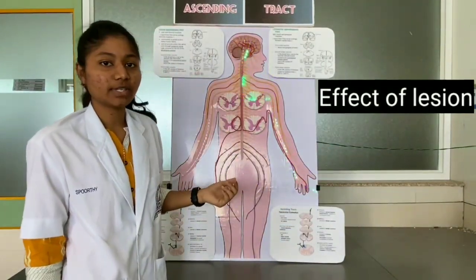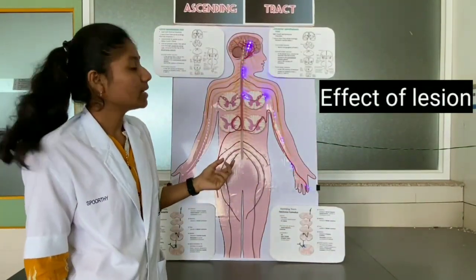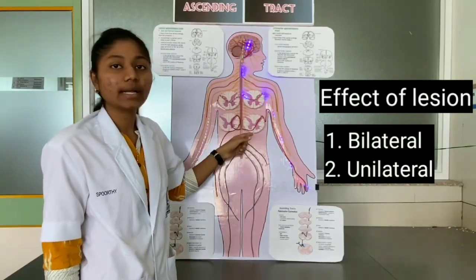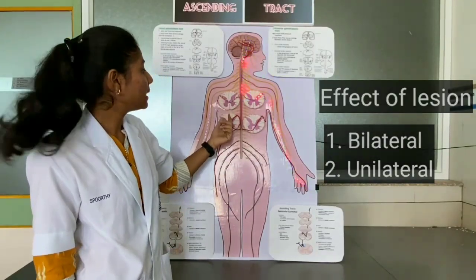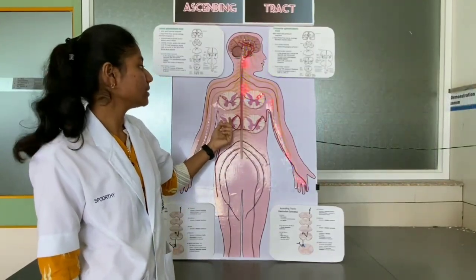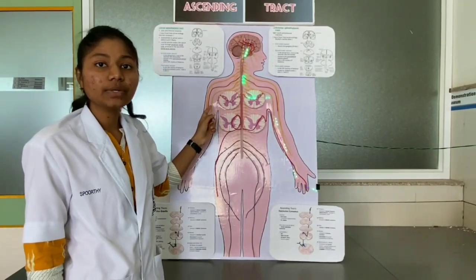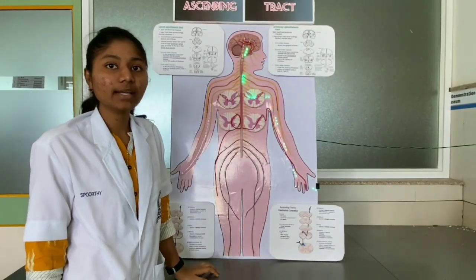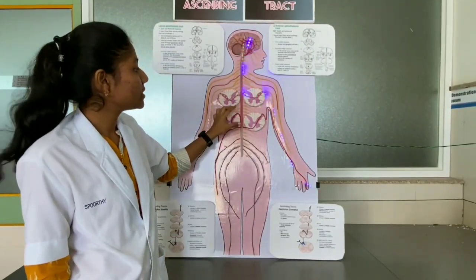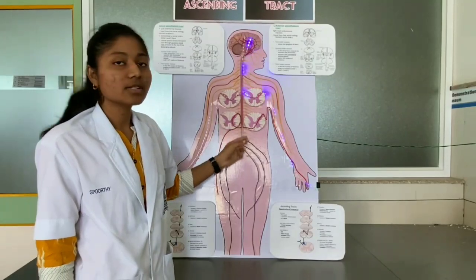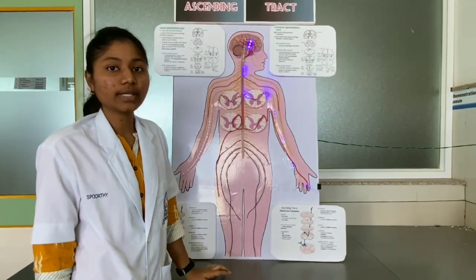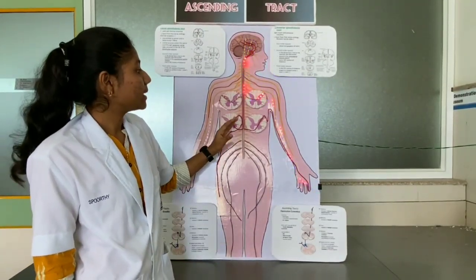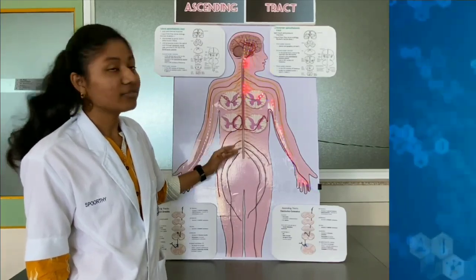Regarding the effect of lesion, there are two types: bilateral and unilateral. In bilateral lesion, there is loss of crude touch sensation such as pitching and tickling on both sides. In unilateral lesion, there is also loss of crude touch sensation on the opposite side of the lesion.